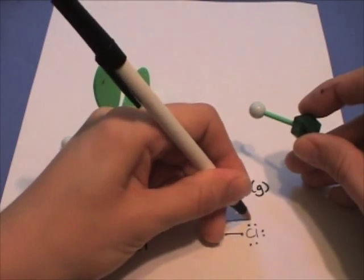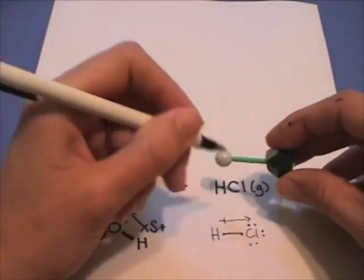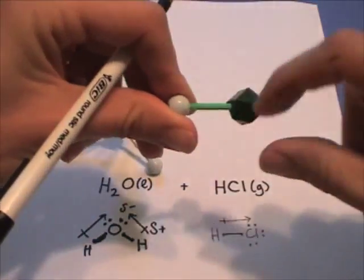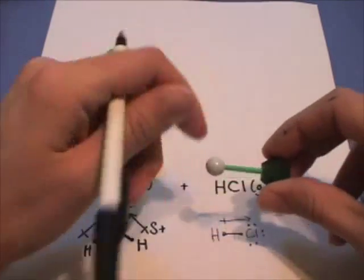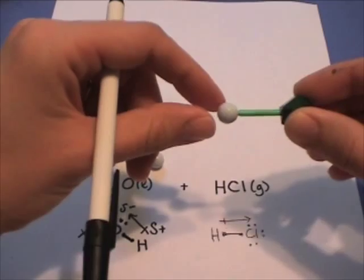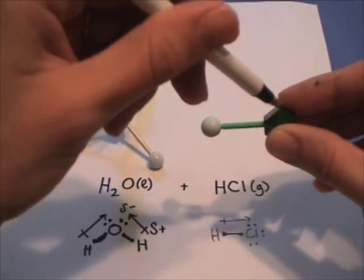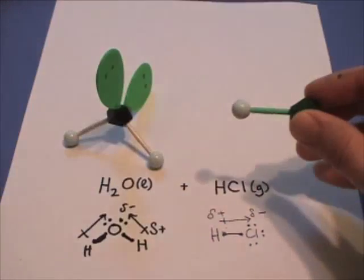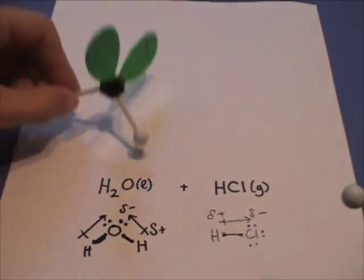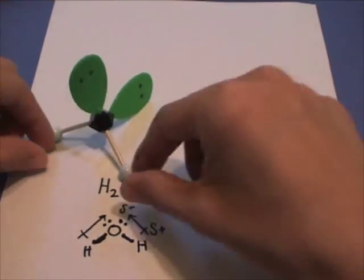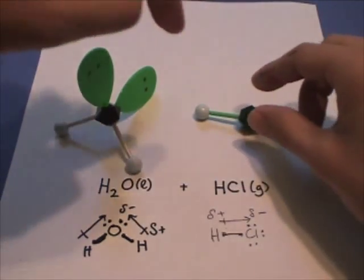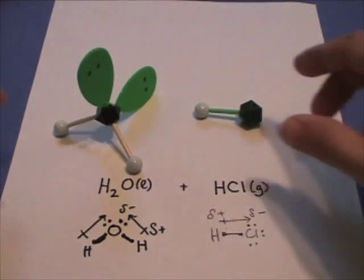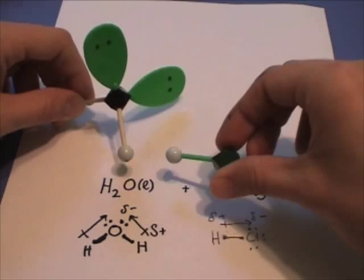It pulls its electrons towards itself a lot more than this hydrogen does, so it's not an equal sharing. This big bad chlorine pulls these two electrons. Remember, a single bond just represents two electrons. This chlorine pulls its electrons towards itself in a polar covalent bond, so this chlorine has a partial negative charge. The hydrogen has a partial positive charge. So we've got this water molecule, partial negative charge, partial positive charge, and a hydrogen chloride, HCl, has a partial positive charge and a partial negative charge.